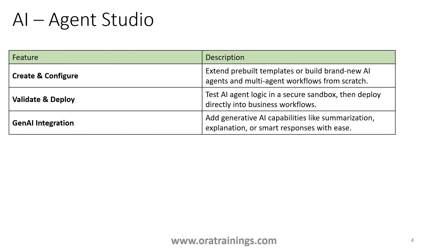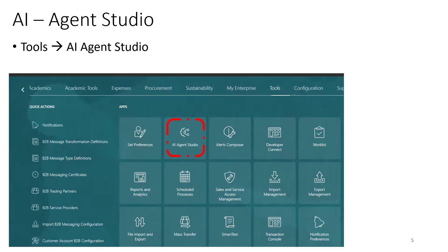Agent Studio allows you to create and configure agents — you can create a new agent or modify an existing standard agent to meet your requirements. You validate what you've developed and deploy it. It also integrates with different LLMs; currently it has a built-in default, but it will support a larger number of LLMs in the future. To access it, click on Tools and then Agent Studio.